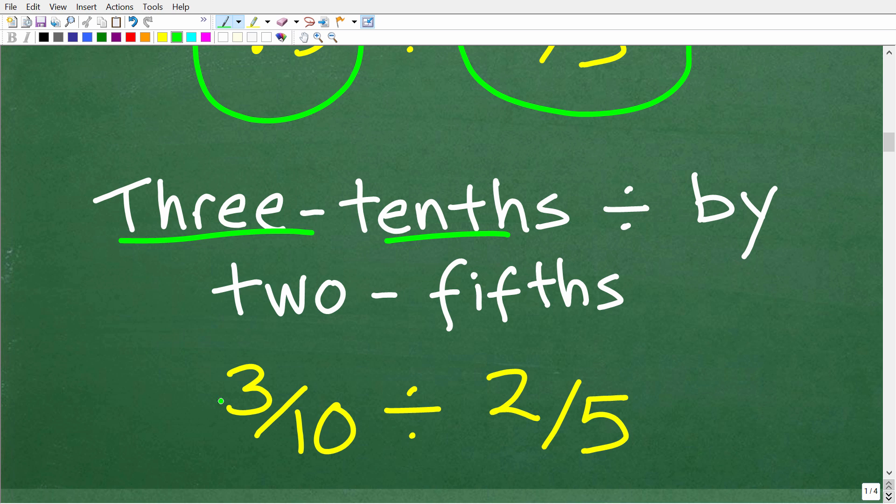That fraction would look like 3/10. So three-tenths is the same thing as this fraction, three over ten, divided by this fraction, two-fifths. Now we have a basic fraction division problem, which your child definitely needs to know how to do to be successful in algebra.